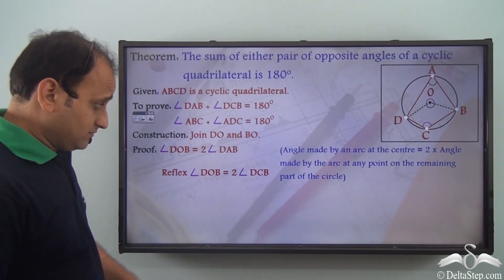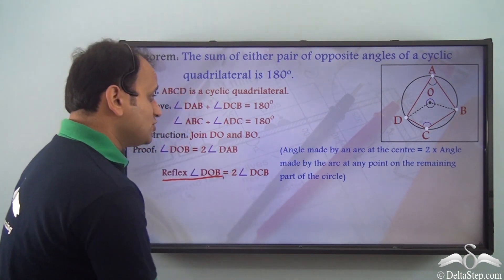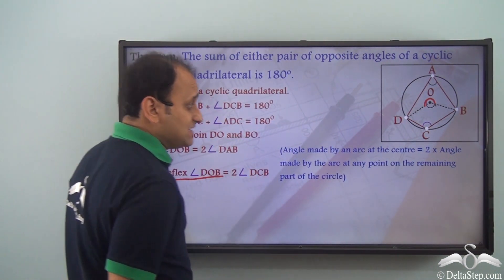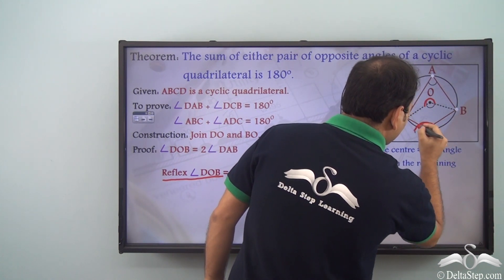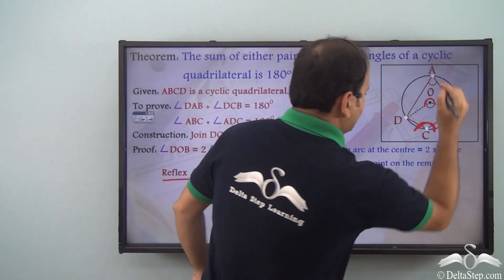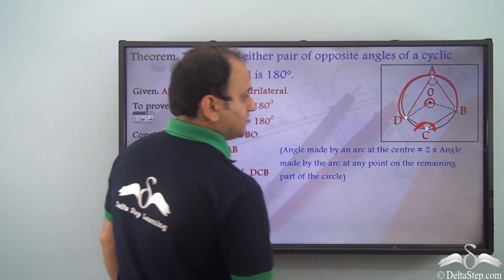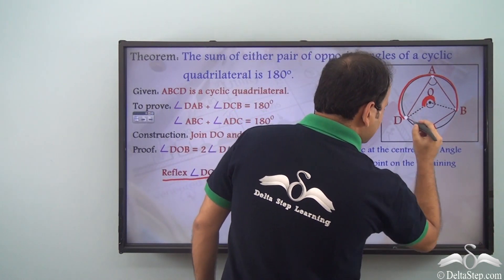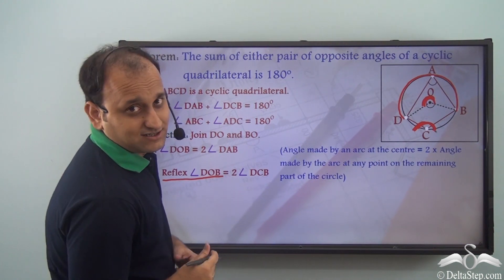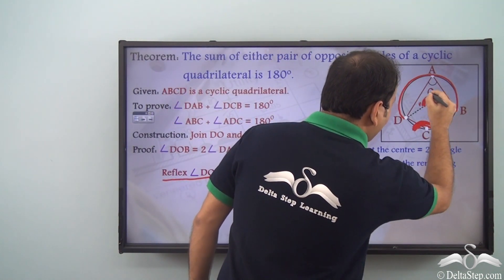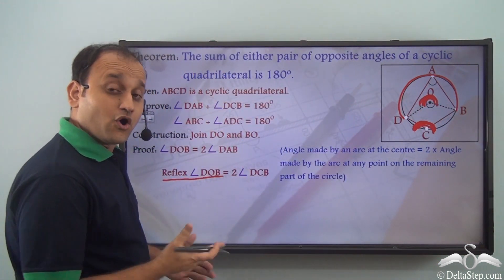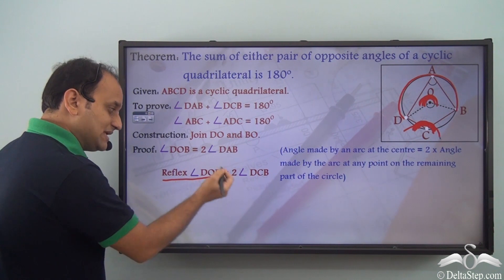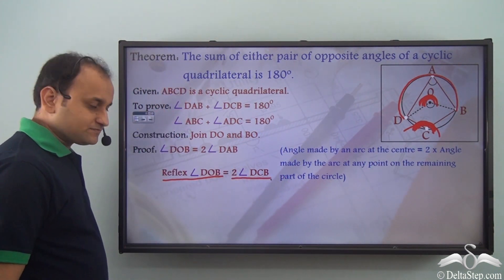Using the same theorem again, we can say that the reflex of angle DOB is equal to 2 times angle DCB. This particular arc subtends this angle at the centre, and the same arc subtends this angle at point C on the circle. So, the angle subtended at the centre will be double this particular angle. Therefore, reflex of angle DOB is equal to 2 times angle DCB.